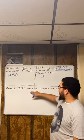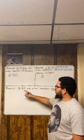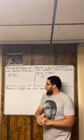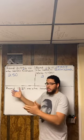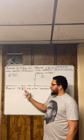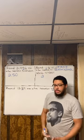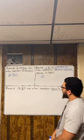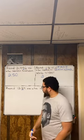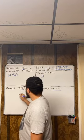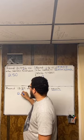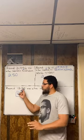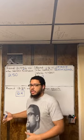Last example: round 12.39 to the nearest tenth. The tenths place — right here. The digit to the right of the three is a nine. Nine is above five, so five and above give it a shove — the three bumps up to a four. The 12 stays the same, the nine is gone. Answer: 12.4, rounded to the nearest tenth.